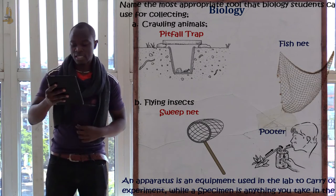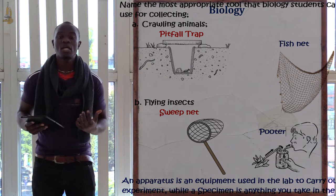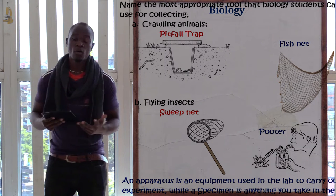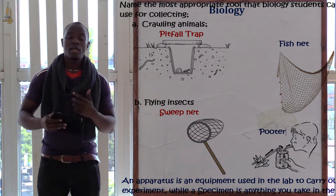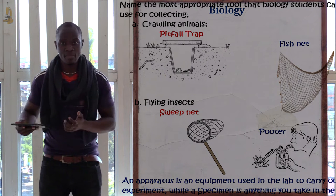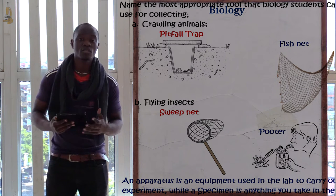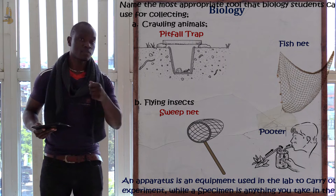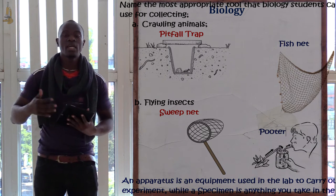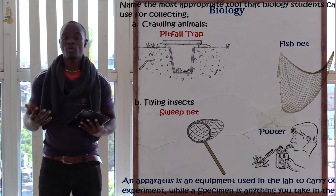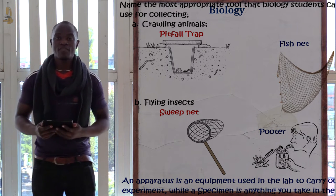Those are the apparatus the question was asking about. Now let's define the term apparatus. An apparatus is any equipment used in the laboratory to carry out an experiment. For example, if you use a spoon or a beaker, that becomes an apparatus. Any equipment used in the laboratory to carry out an experiment is called an apparatus.